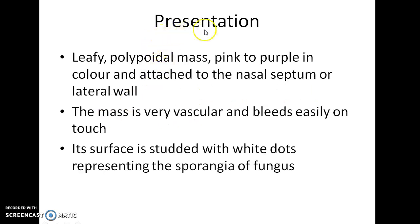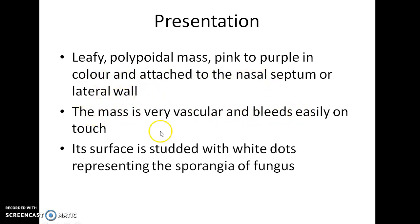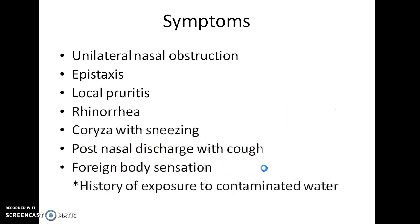How does a case of Rhinosporidiosis present to you? Rhinosporidiosis presents as a leafy polypoidal mass, pink to purple in color, and attached to the nasal septum or lateral wall. The mass is very vascular and bleeds easily on touch. Its surface is studded with white dots representing the sporangia of the fungus.